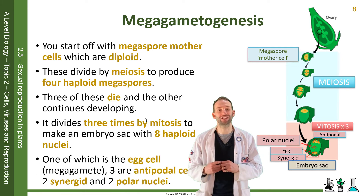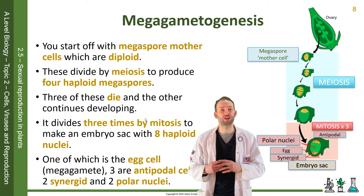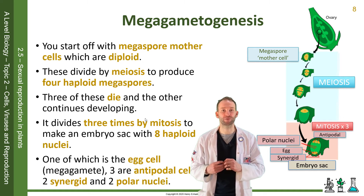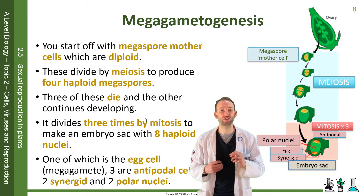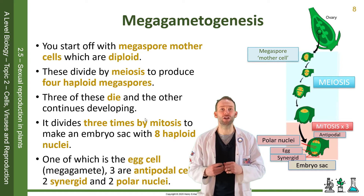One of the eight nuclei is the egg cell — the megagamete. Three are what we call antipodal cells. Two are synergid cells, and two are polar nuclei.